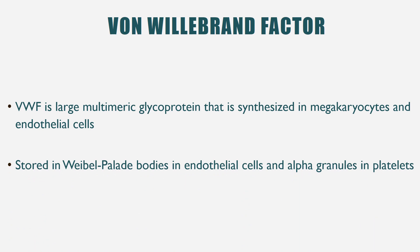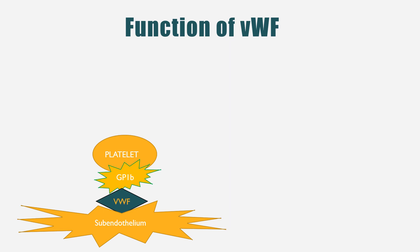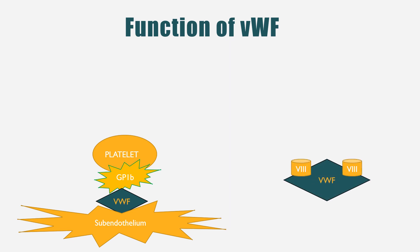Von Willebrand factor is stored in Weibel-Palade bodies in endothelial cells and alpha granules in platelets. The first function of von Willebrand factor is to tether platelets to the injured subendothelium by providing binding sites for platelets and collagen. After vascular injury, there are conformational changes in von Willebrand factor which facilitate its ability to bind the platelet through a binding site on platelet glycoprotein 1b, enabling recruitment of platelets to the site of clot formation. This depends on the high molecular weight multimer form of von Willebrand factor.